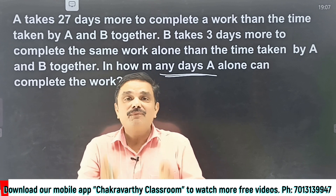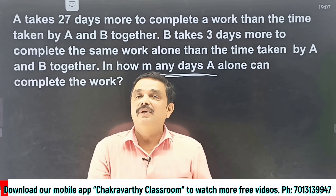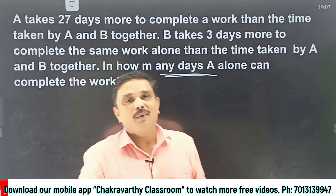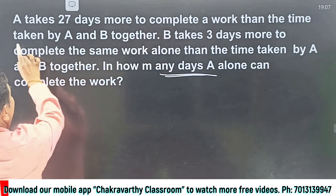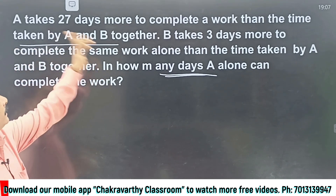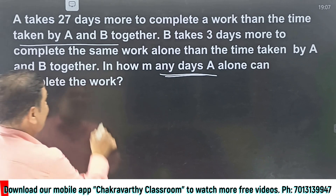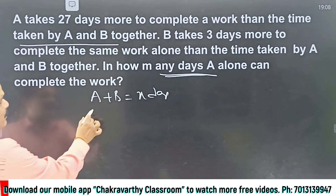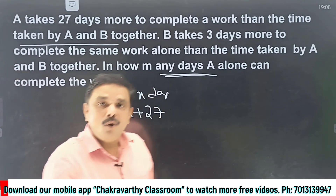If you know the methodology, if you know the basics and can apply the shortcuts from our previous basic videos, you can do this question in a maximum of 30 seconds. Now, A takes 27 days more to complete a work than the time taken by A and B together. If A and B take X days to complete the work, how many days must A take? Very simple — that is X plus 27, because A takes 27 more days.